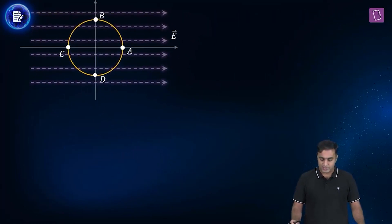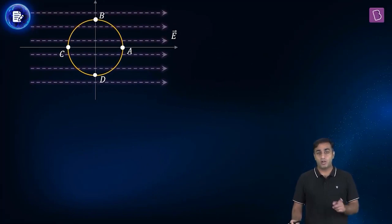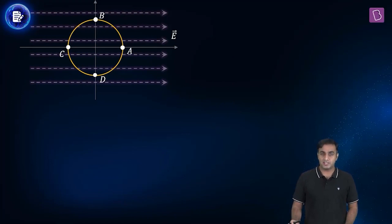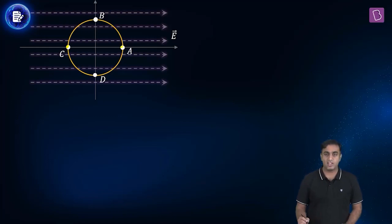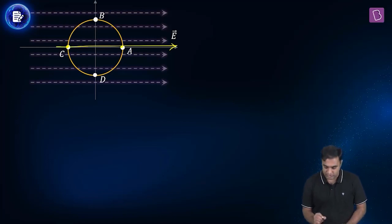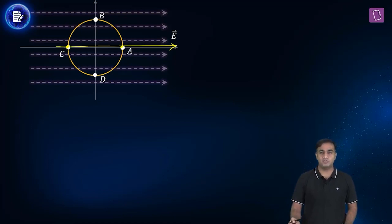In order to answer this question, you need to remember the fact that the electric field happens to be along the direction in which the electric potential decreases at the highest rate. So, you know that potential at C is greater than potential at A because this happens to be the direction of the electric field.